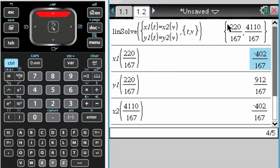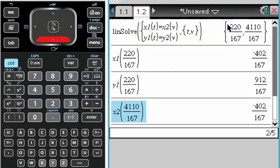Those are the times, and then we found the location of the intersection of their paths. That's at x equals negative 402 over 167 and y is 912 over 167.